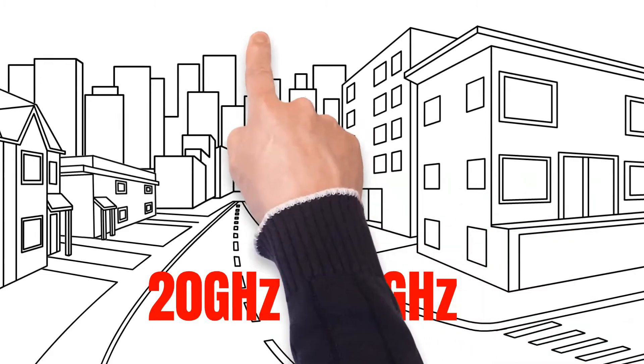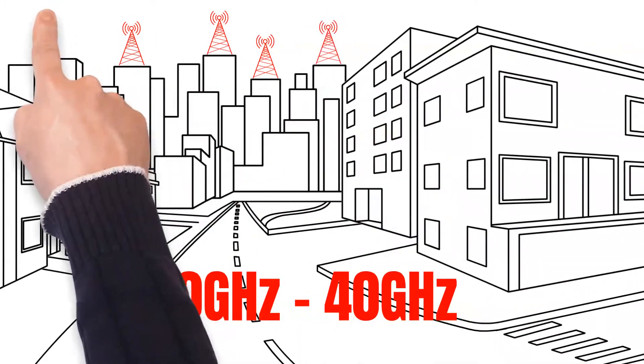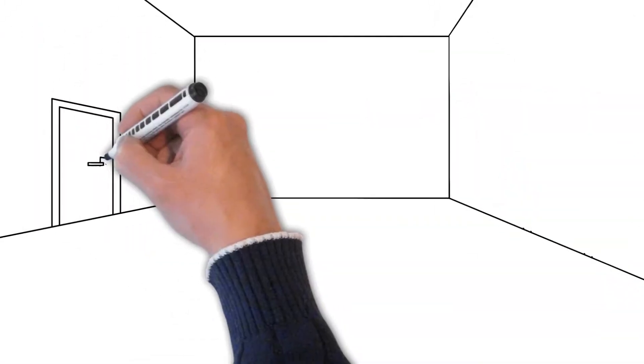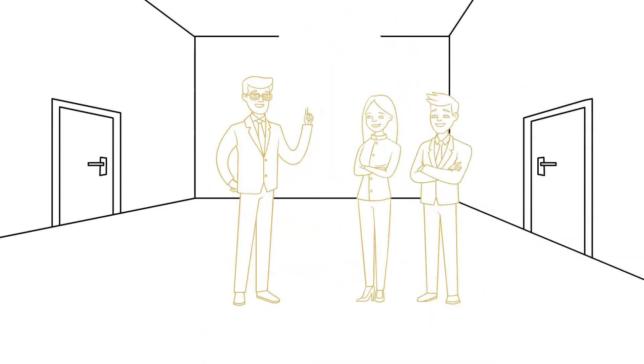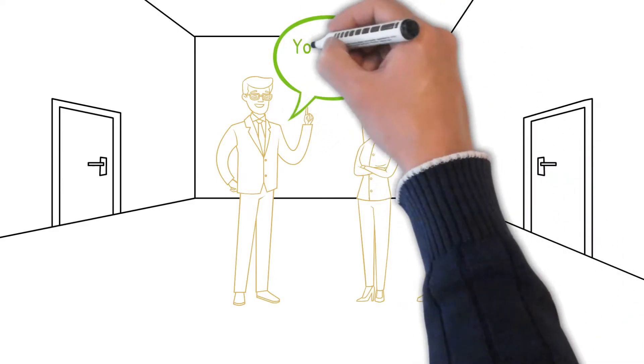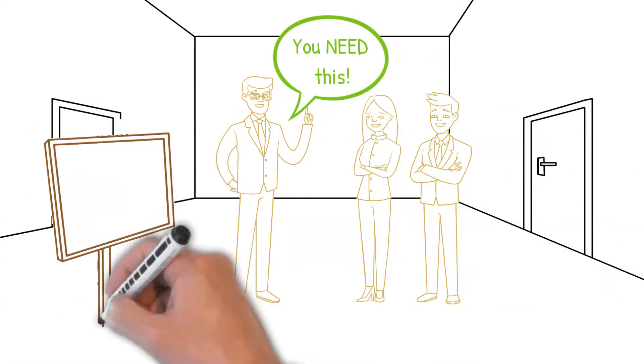70 gigahertz is on the way, and so you really need a monitor now today that will measure 70 gigahertz. The only monitor on the market at the moment that does that comes from EMF Protection - it's called the FM5, and you can order it today.